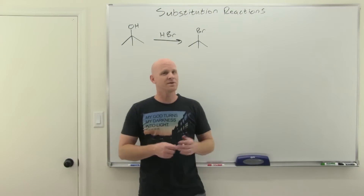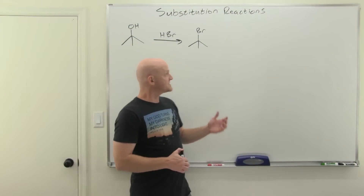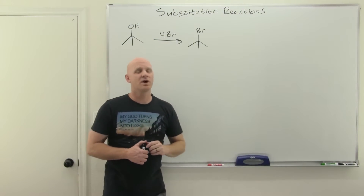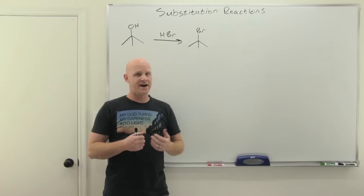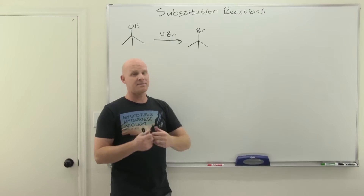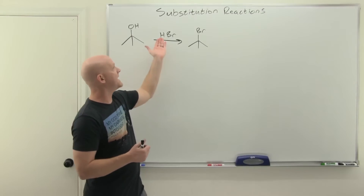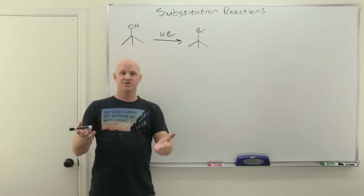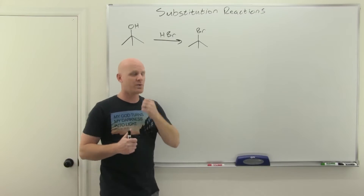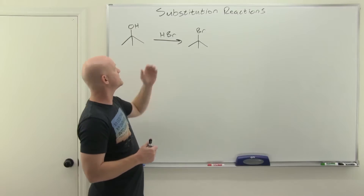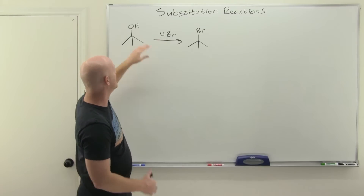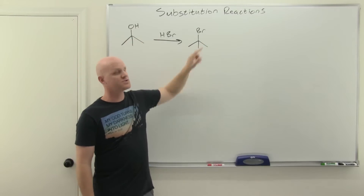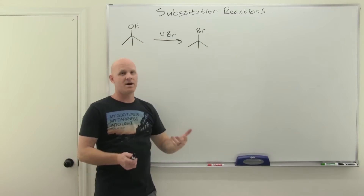So the first example: we said we can replace the hydroxyl group with a halogen like chloride, bromide, or iodide. We'll start by simply adding a very strong acid like HCl, HBr, or HI. Starting with HBr here, we can turn a tertiary alcohol into a tertiary bromide.